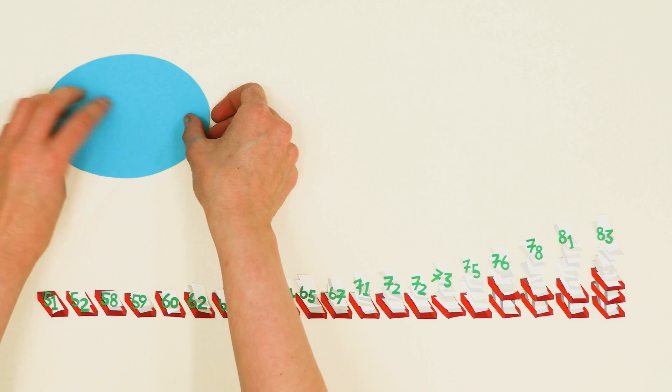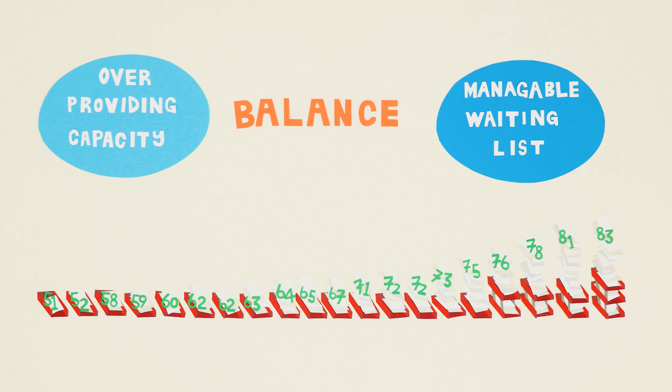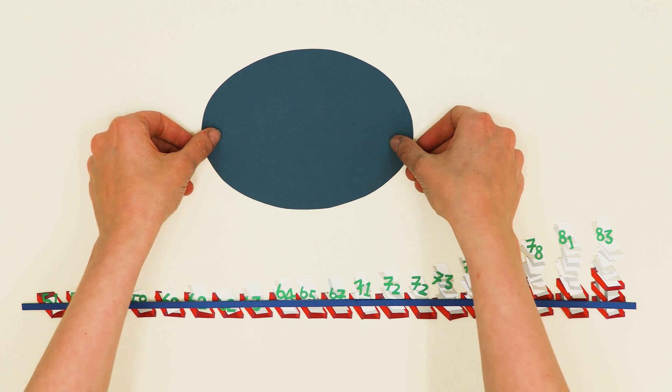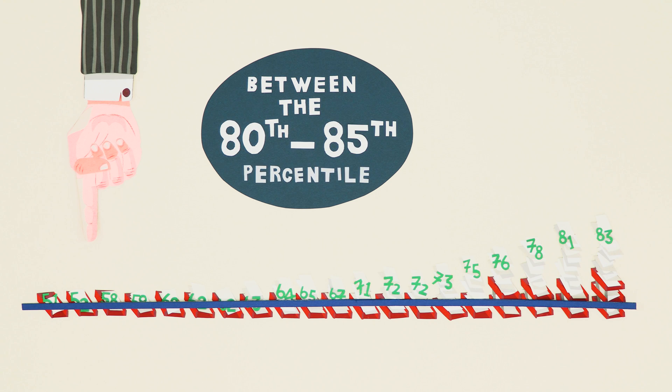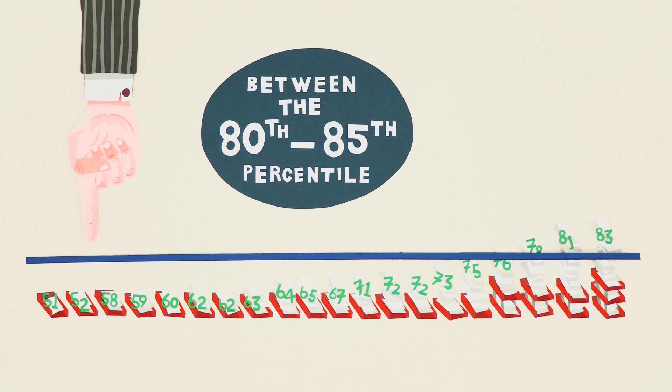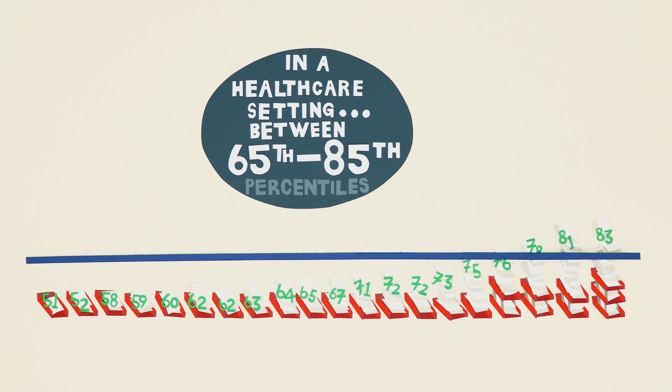We now want to figure out which percentile will give us a good balance between over-providing capacity and keeping our waiting list manageable. Erlang's work suggests that this should be between the 80th and 85th percentile. From experience, we have found that the percentile at which you should have your capacity for a healthcare service can be between the 65th to 85th percentiles.